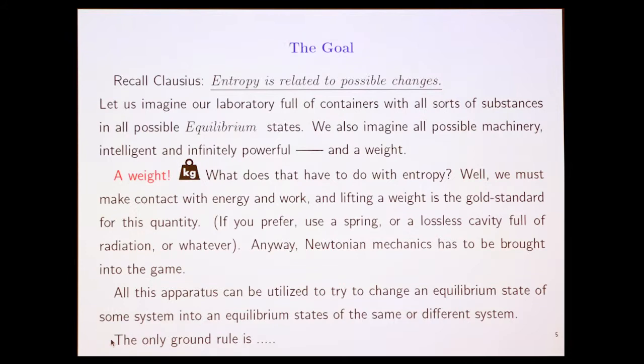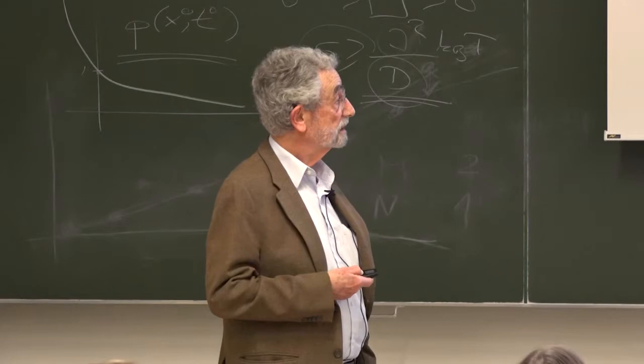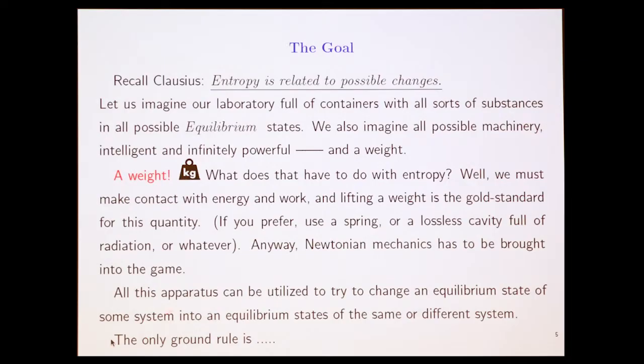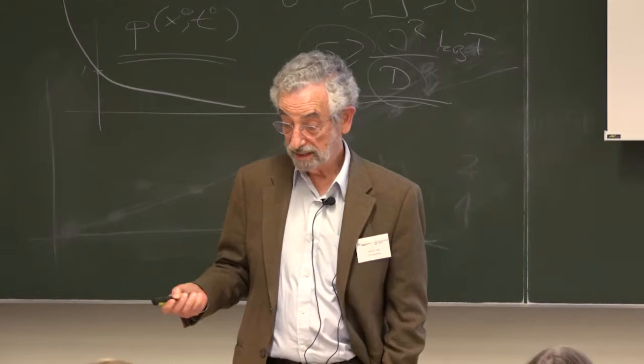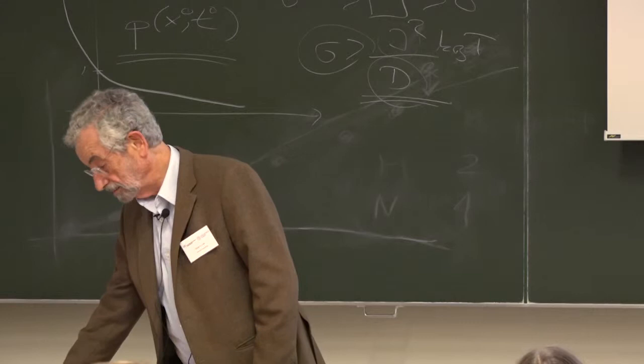All right, so now all this apparatus that I've got, I've got my stuff on the table, I've got a weight, and I've got computers, I've got whatever. All these apparatus can be utilized to try to change an equilibrium state of some system into an equilibrium state. I know this isn't correct English, it's plural, I really meant plural, of the same or different system. For example, I could have mixtures, I can pour one bottle into the other, and I can do all kinds of things like that. So that's my laboratory, that's my setup, and that's my weight.